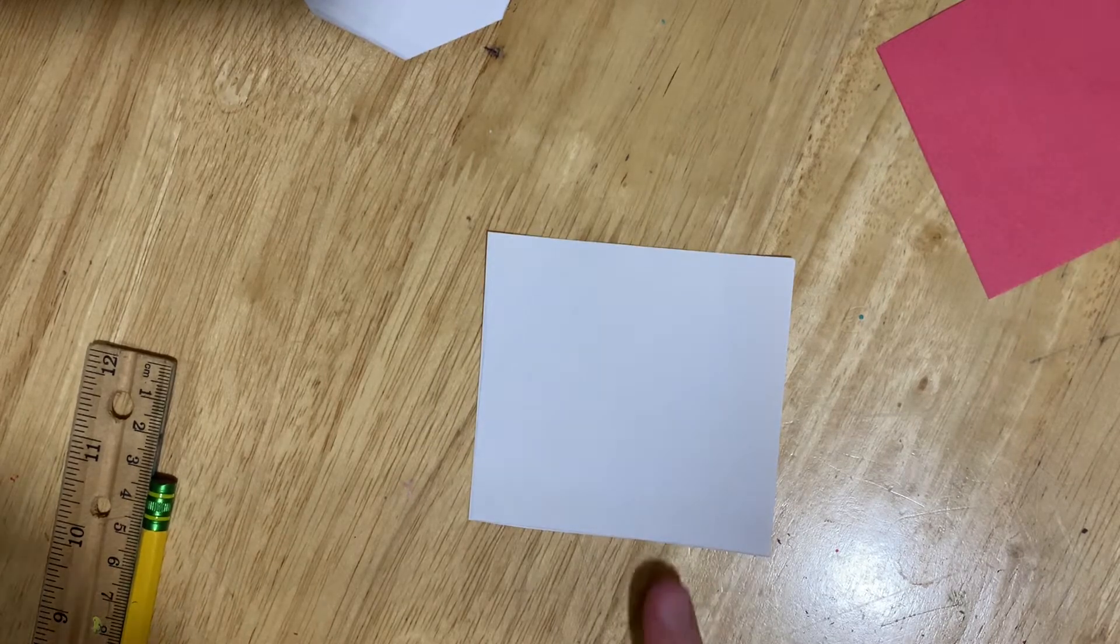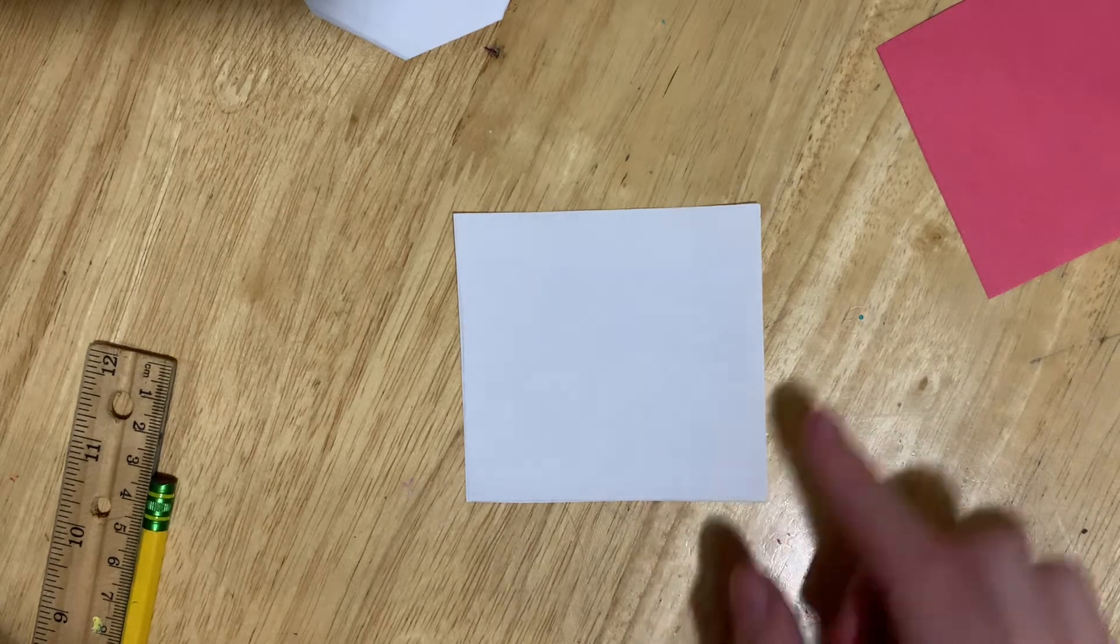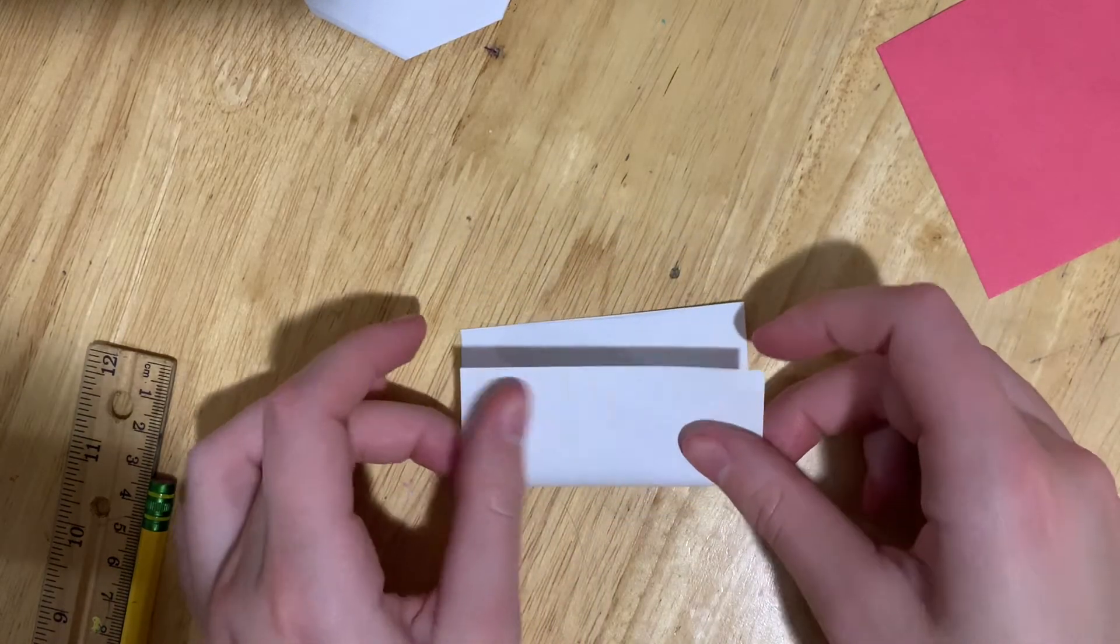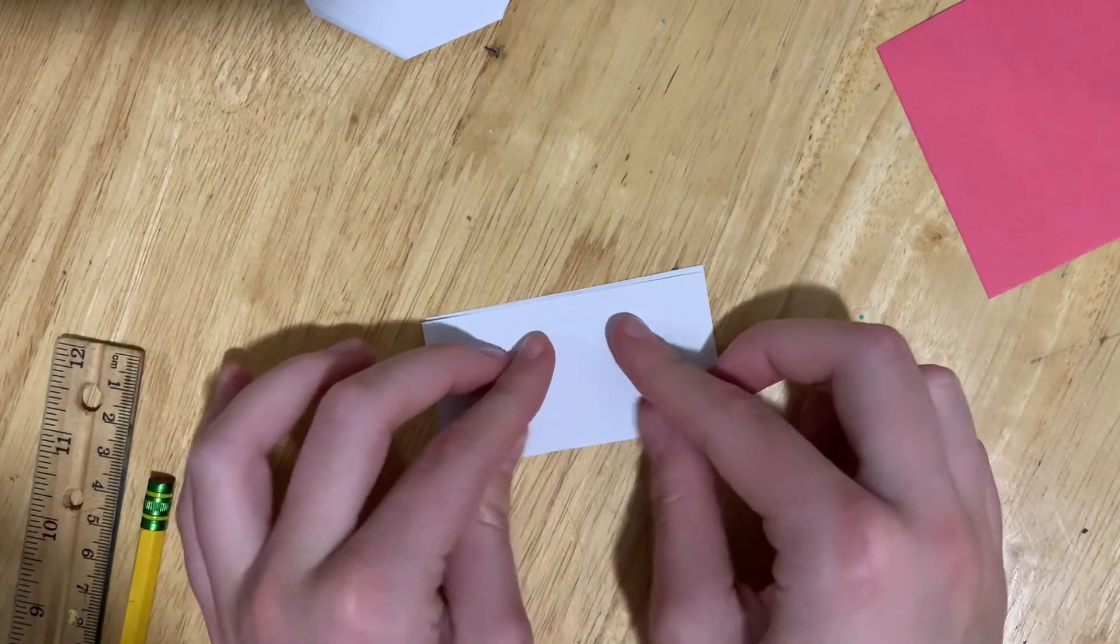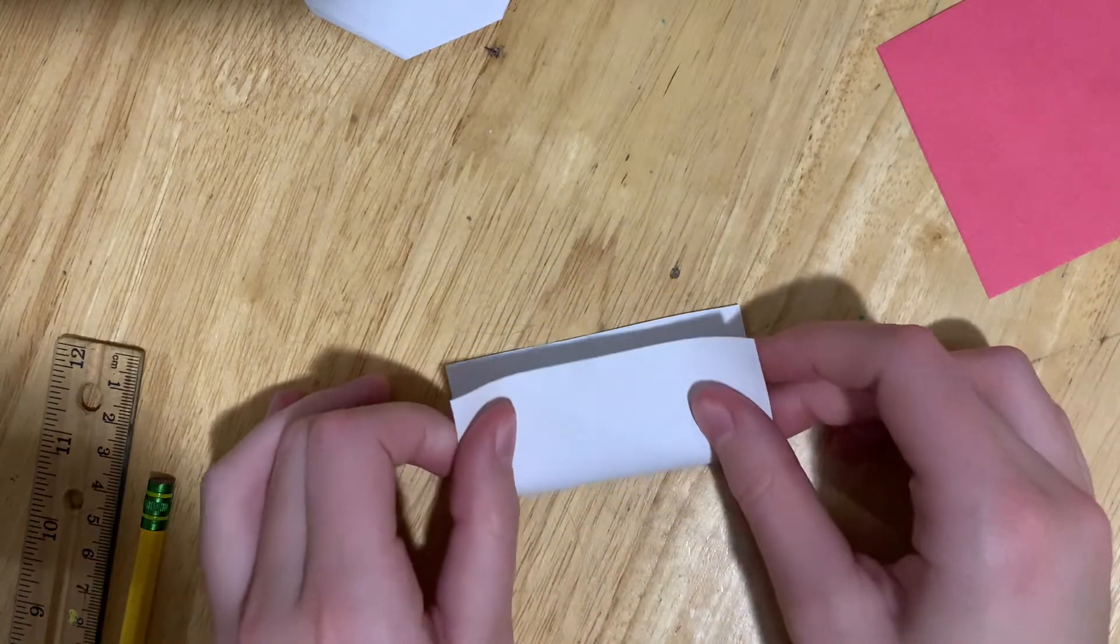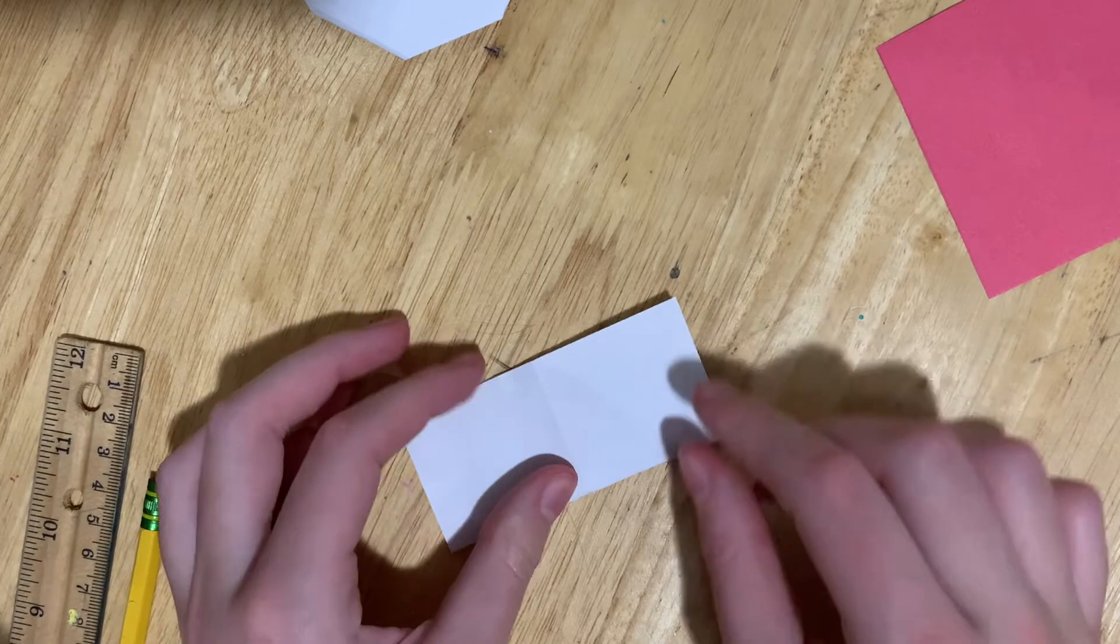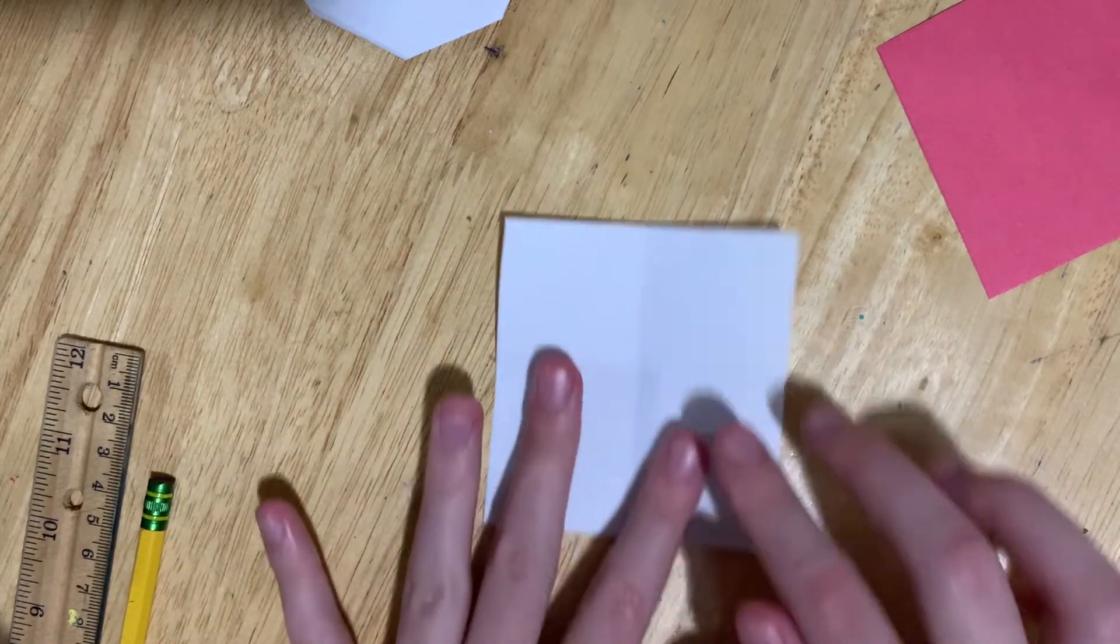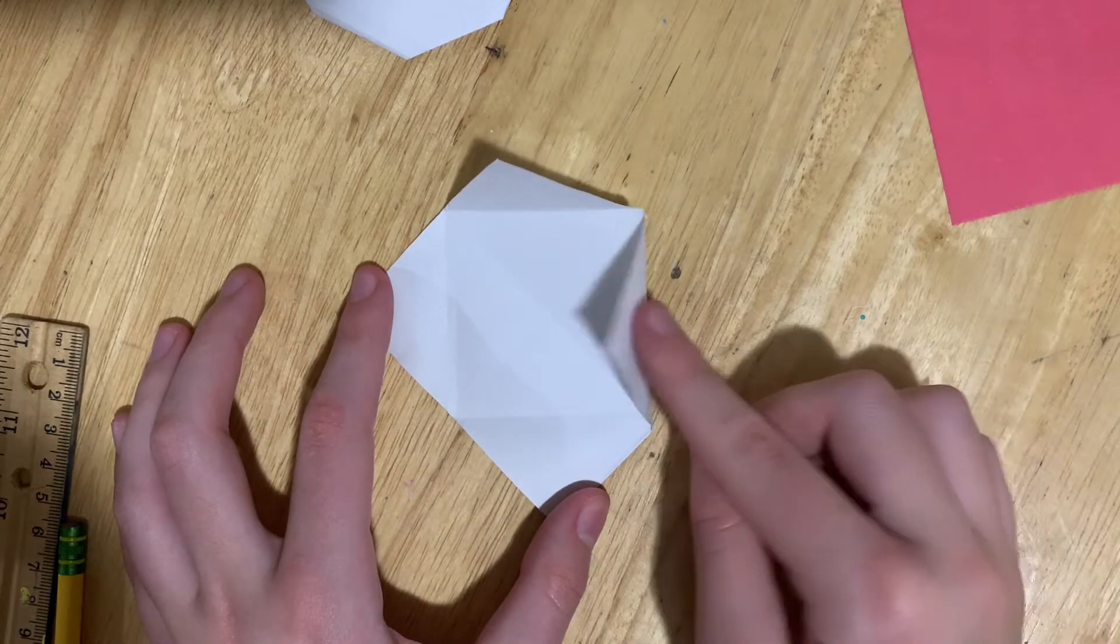Next, we're going to use the 8.5 centimeter square and repeat the same steps. So first, we'll fold the square in half on both sides. Then, like we did last time, fold the peaks towards the middle.